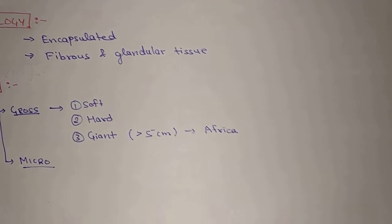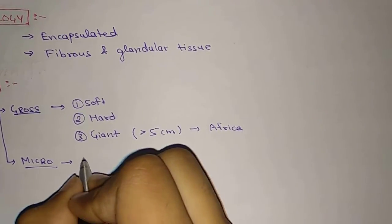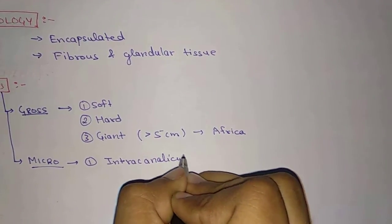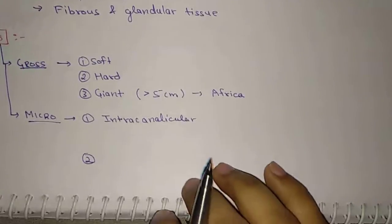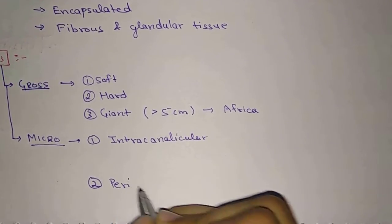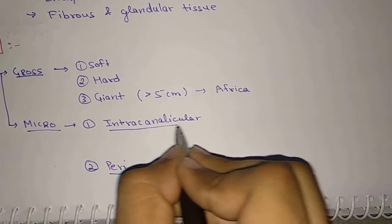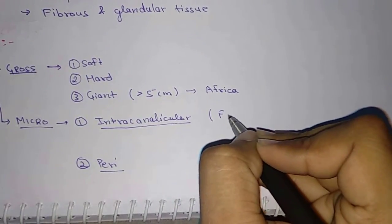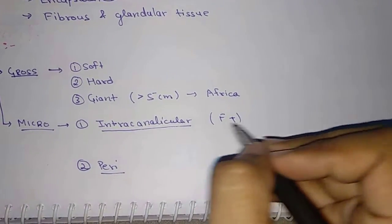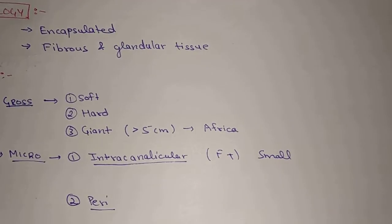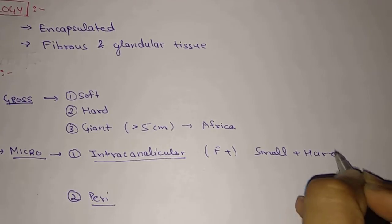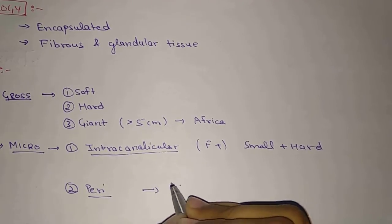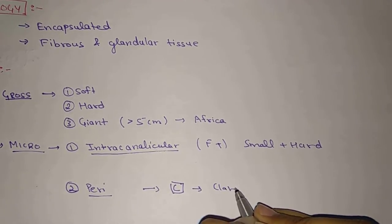The microscopical classification includes intracanalicular and pericanalicular types. The intracanalicular is mainly made up of fibrous tissue and is small and hard. The pericanalicular is mainly cellular type and is large and soft.